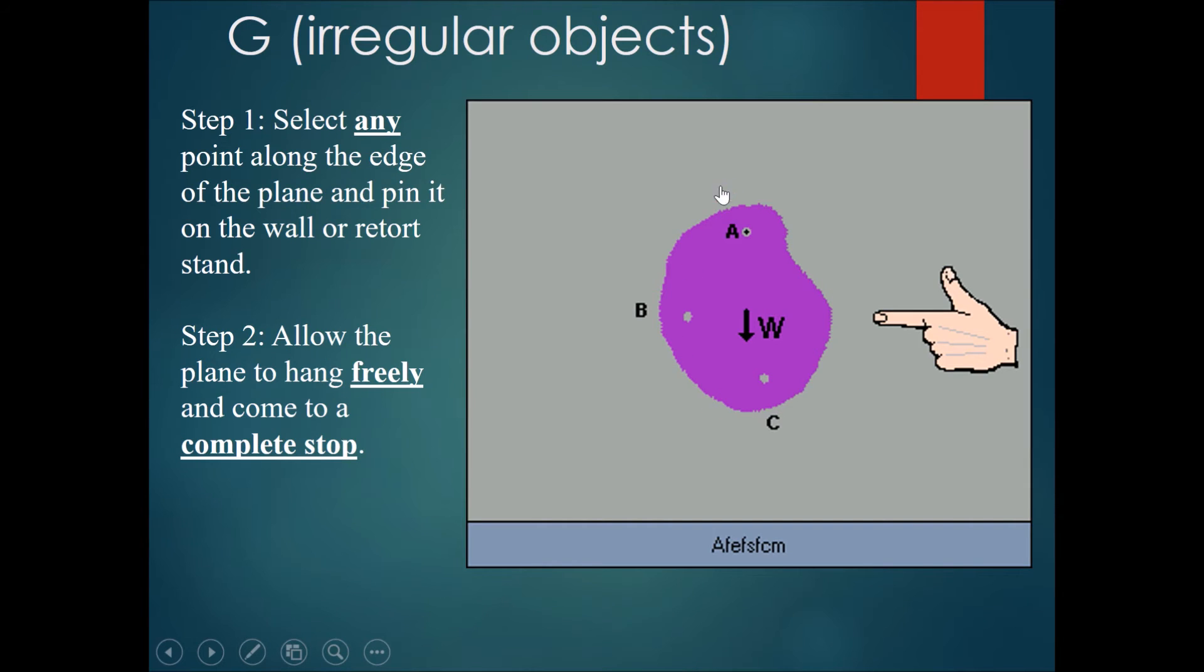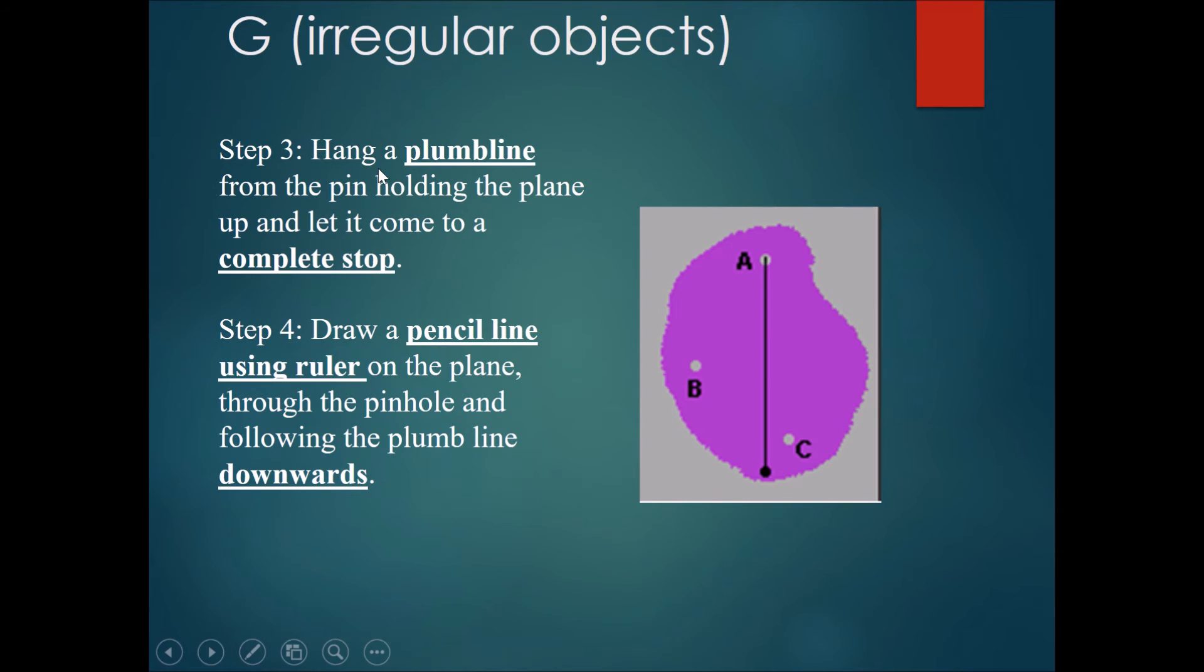Imagine an irregular object like this, like an unevenly cut piece of paper. The first thing to do would be to select any point along the edge of the plane and pin it on the wall or clip it so that it swings freely on a retort stand. Now, you let the paper swing freely and let it come to a complete stop. Step three: wherever you pinned it, you hang a plumb line at exactly that place, at the place of the pin. Then, you let the plumb line swing and let it come to a complete stop as well.